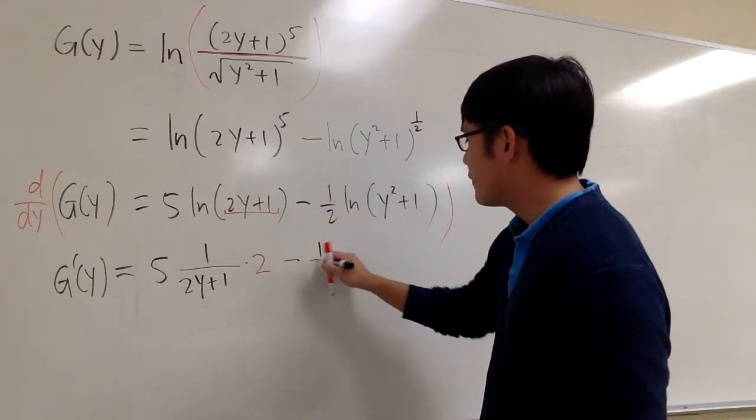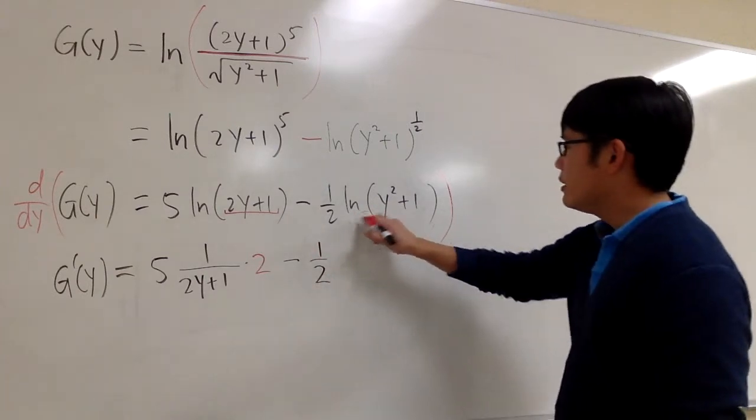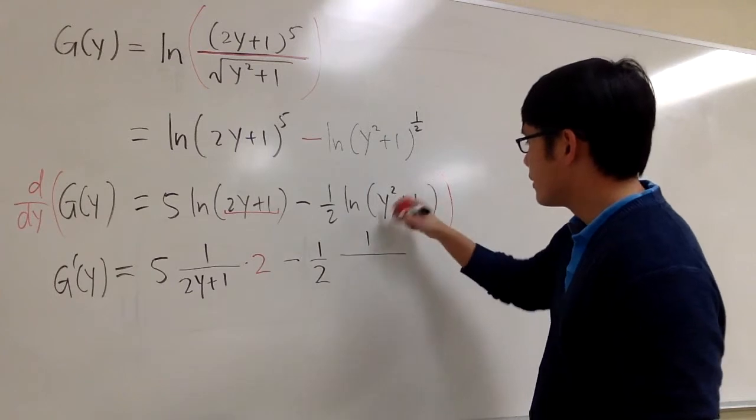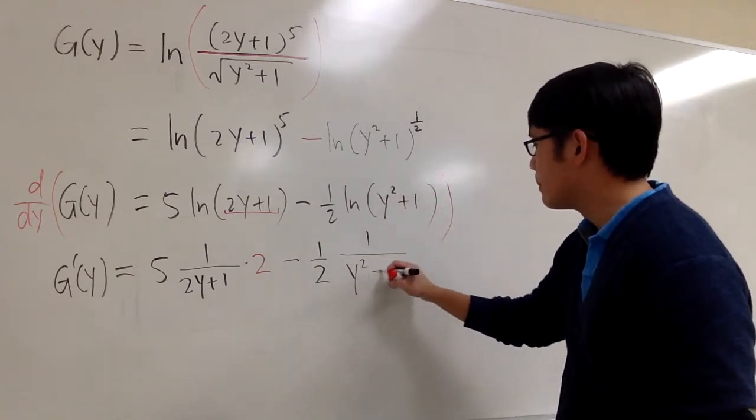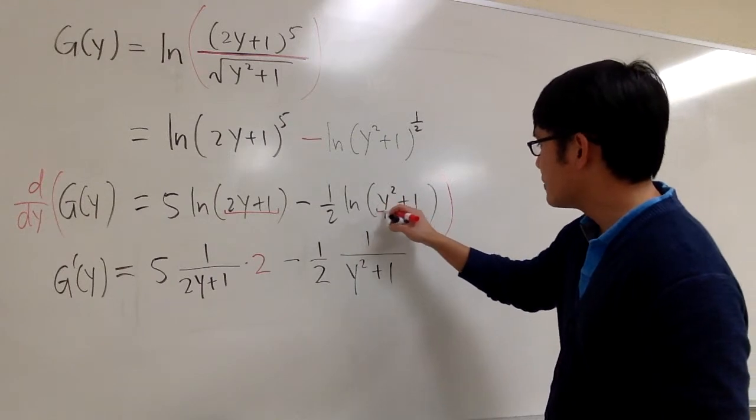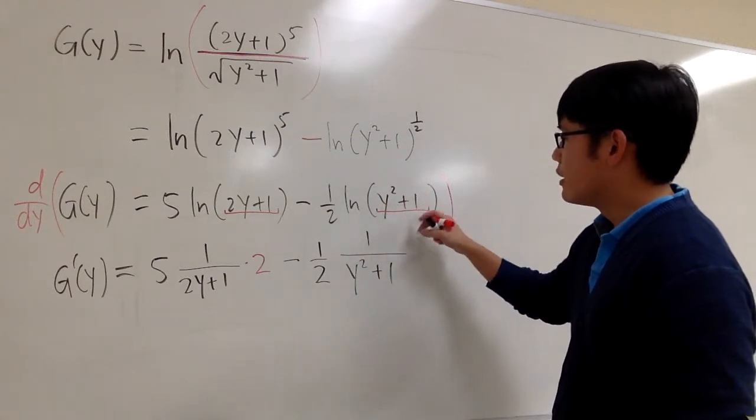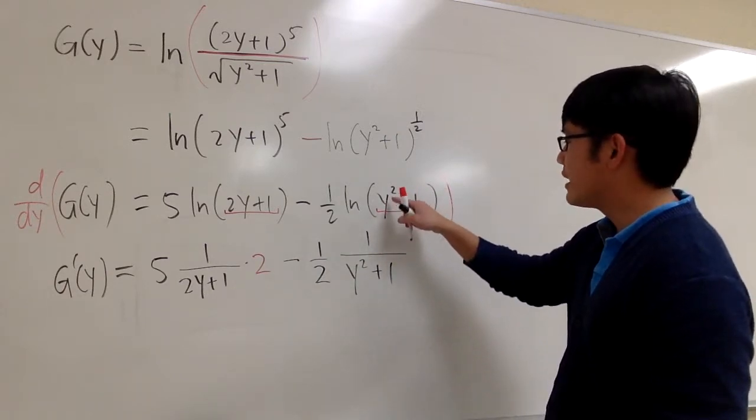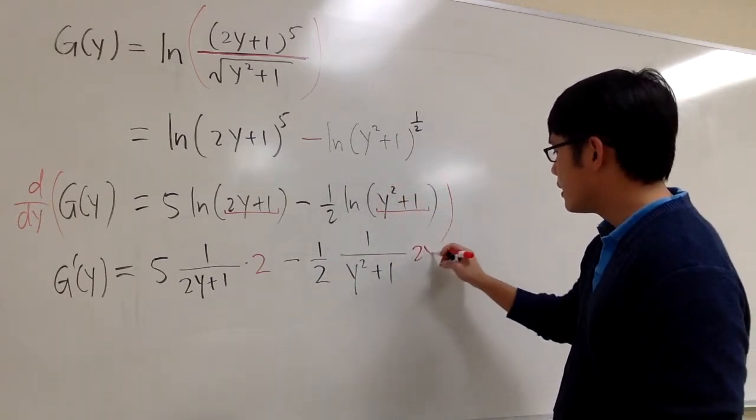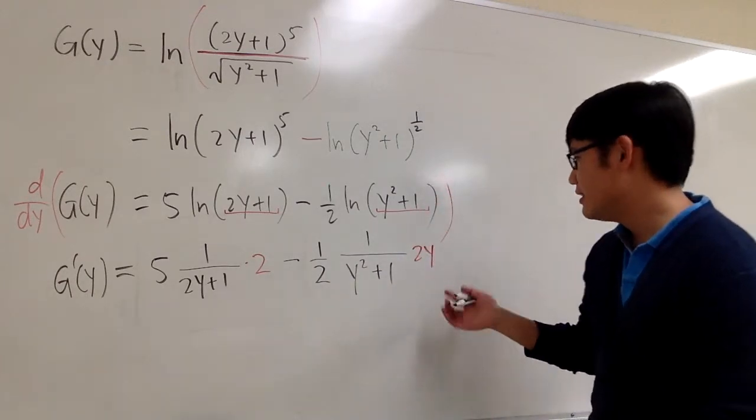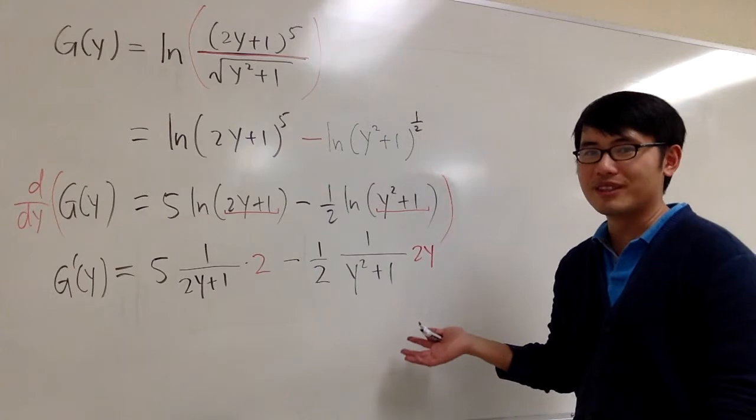Minus 1 half ln of this. The derivative of that will be 1 over the inside, which is y squared plus 1. And now let's look at the inside. Y squared plus 1. When you take the derivative of this with respect to y, you are going to get 2y. And this is pretty much the calculus part.